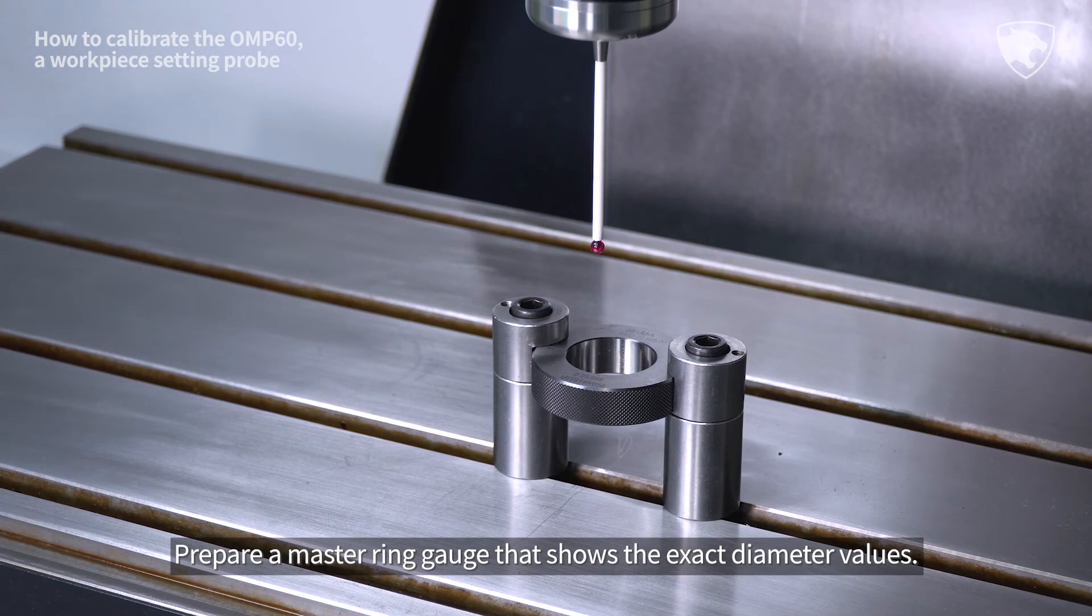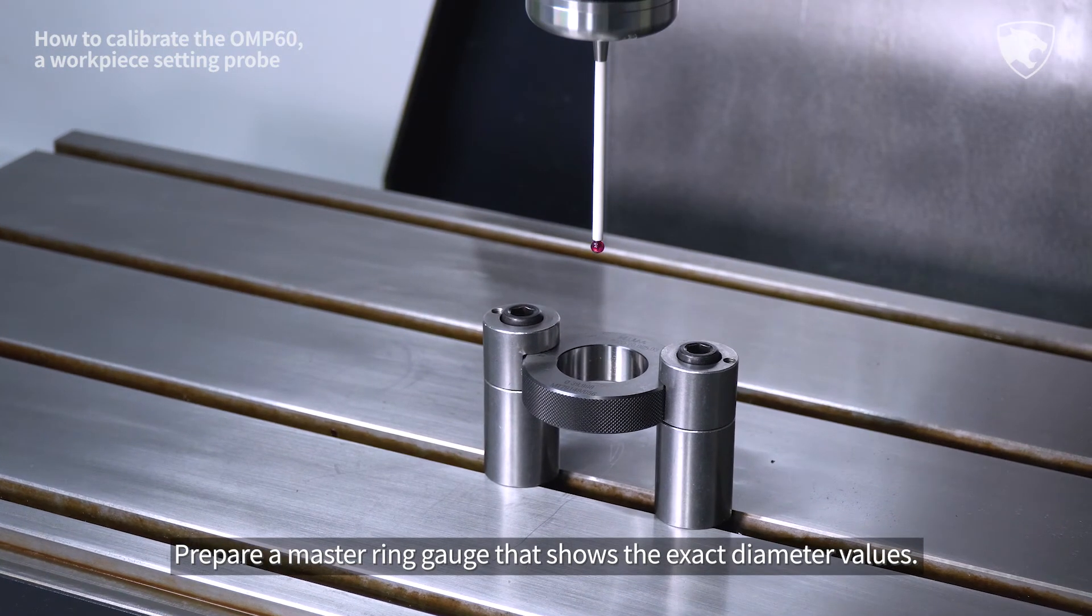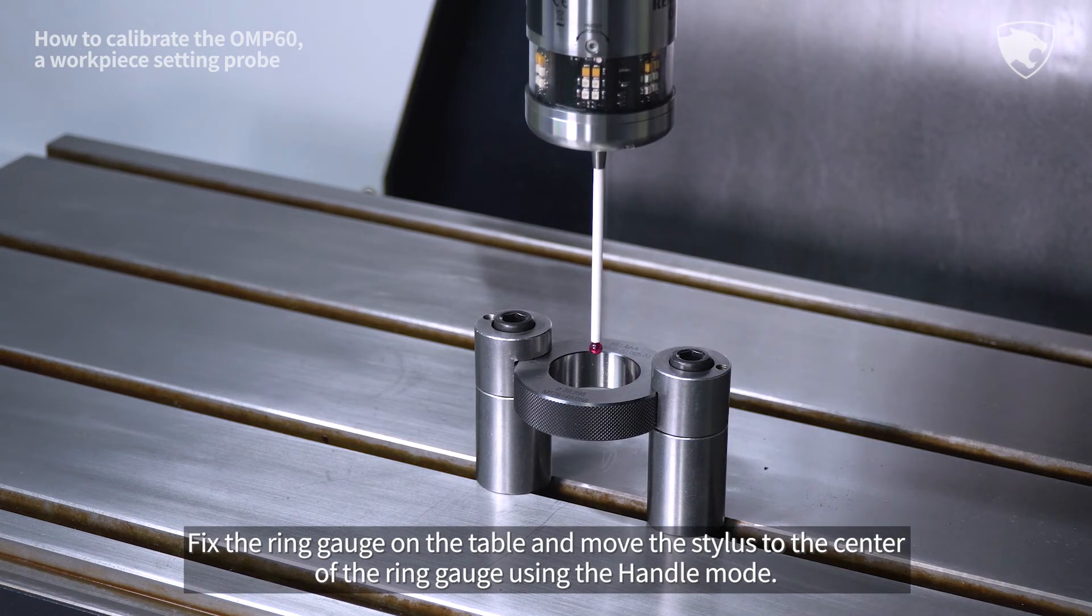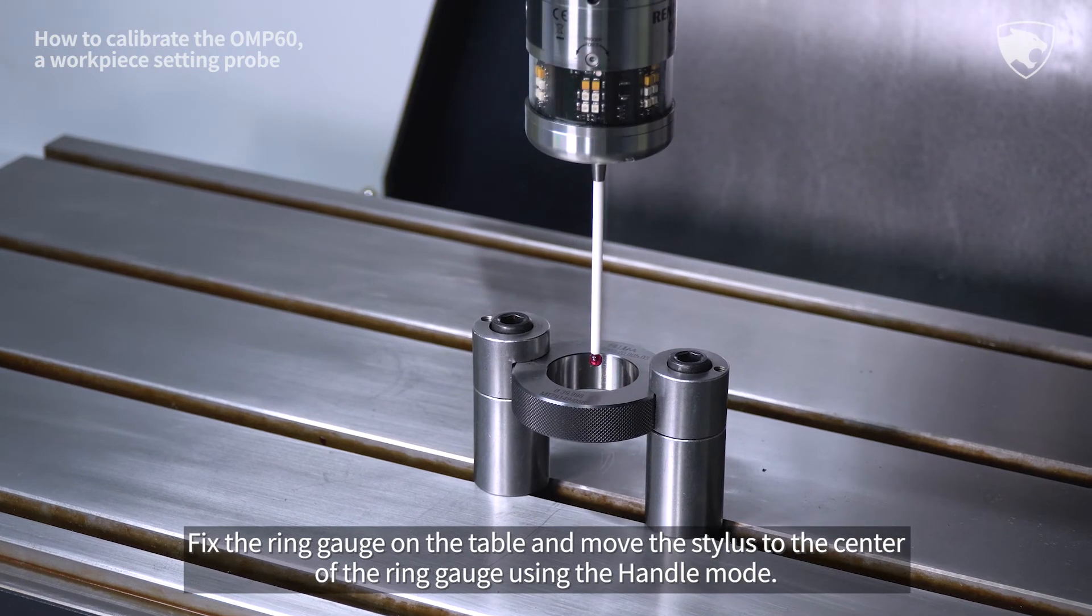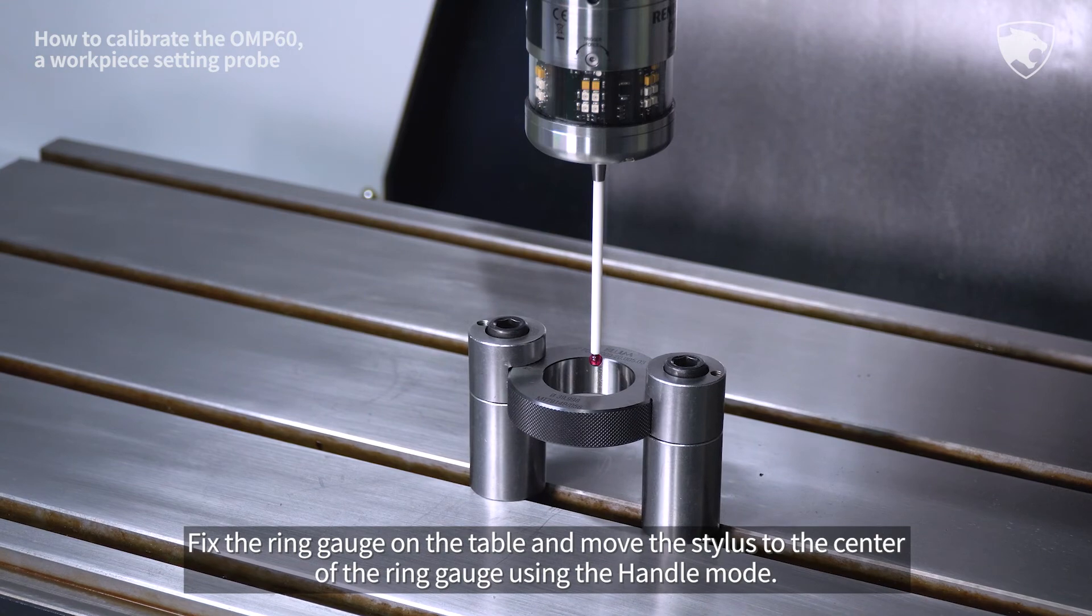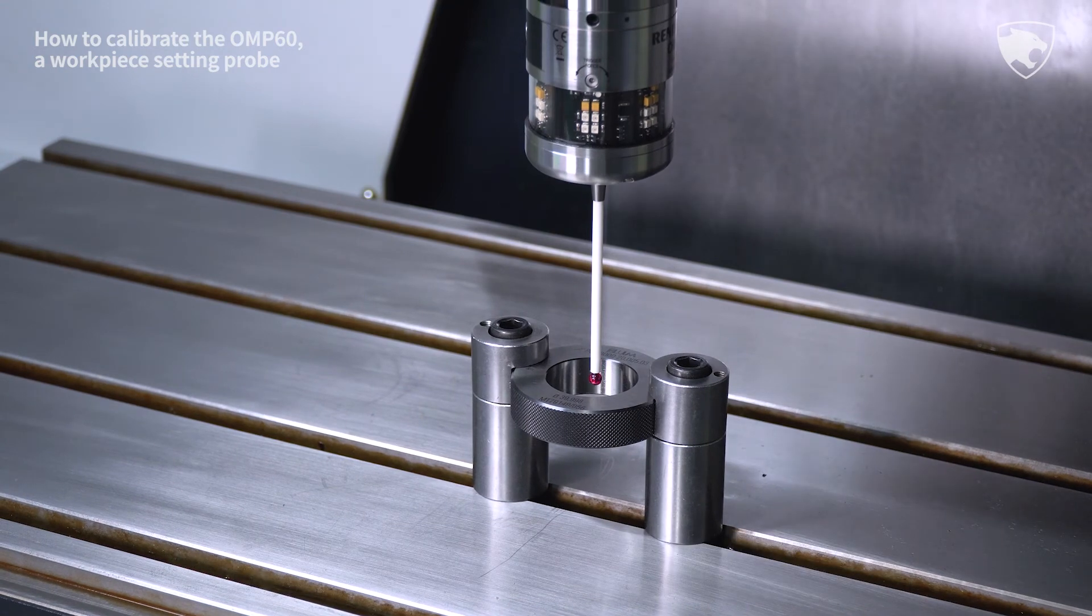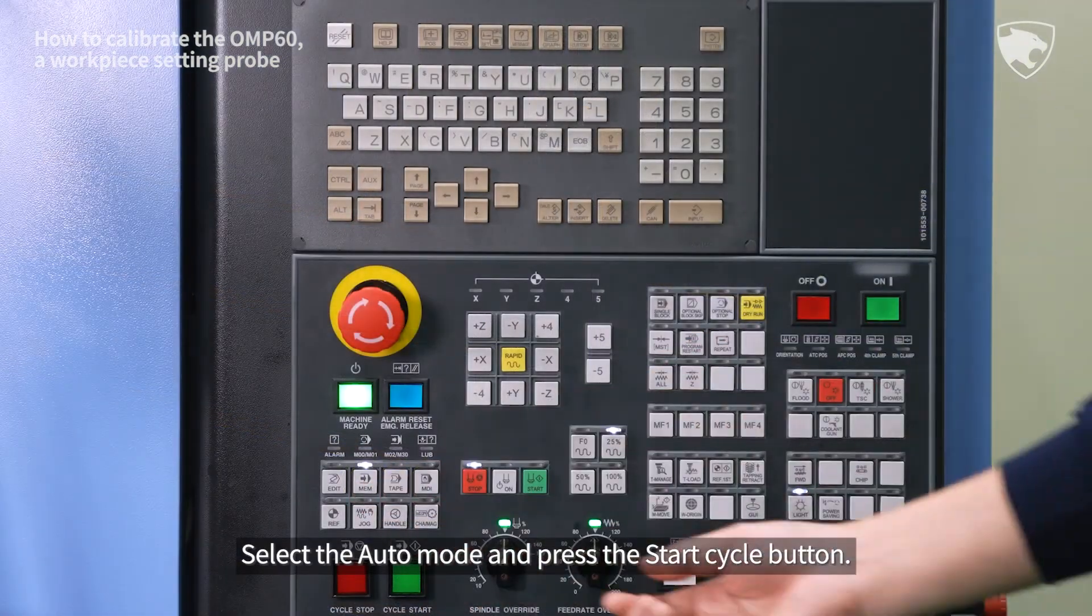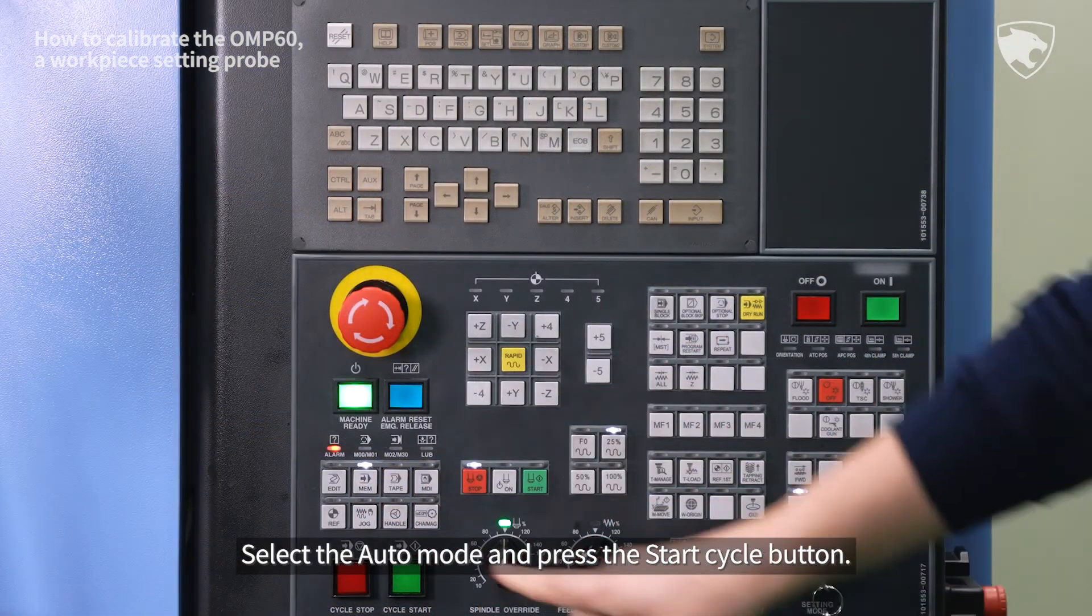Prepare a master ring gauge that shows the exact diameter values. Fix the ring gauge on the table and move the stylus to the center of the ring gauge using the handle mode. Select the auto mode and press the start cycle button.